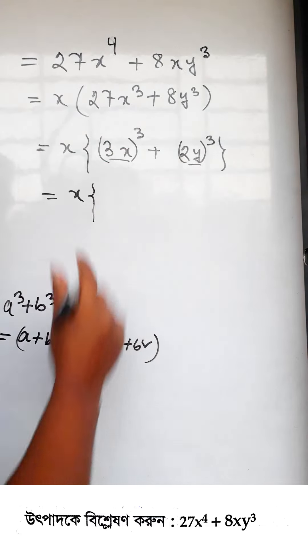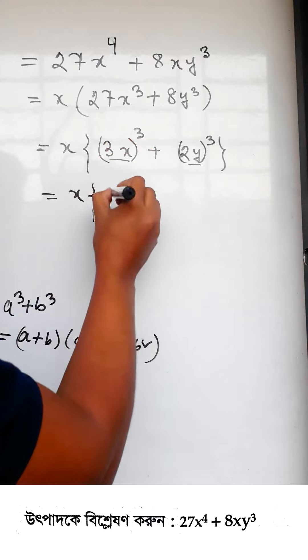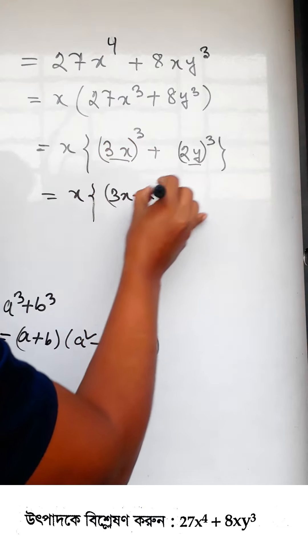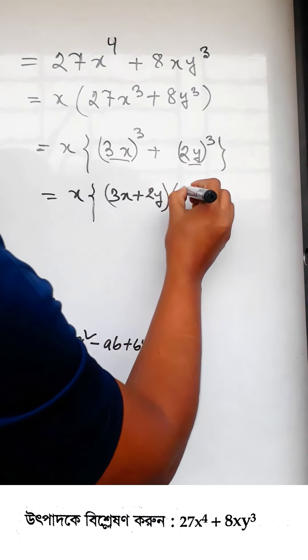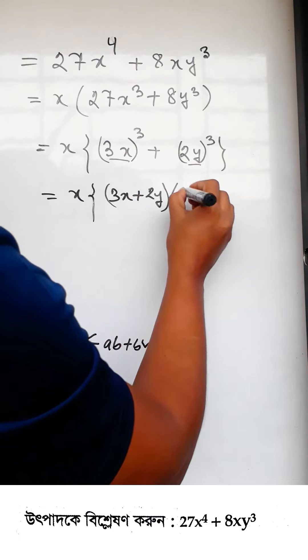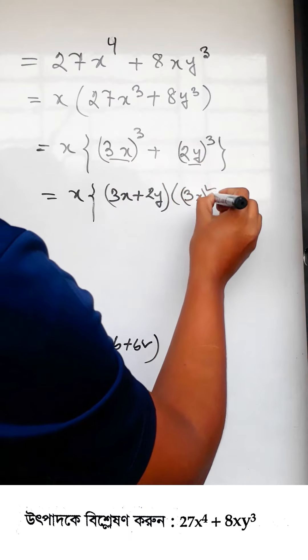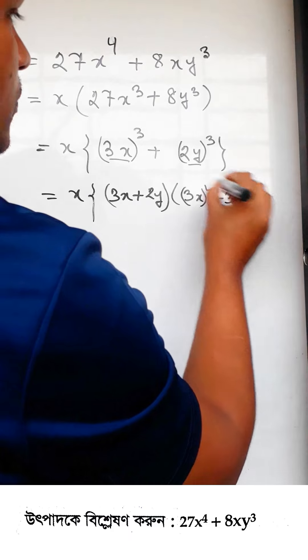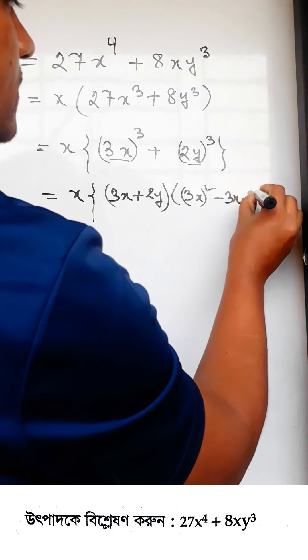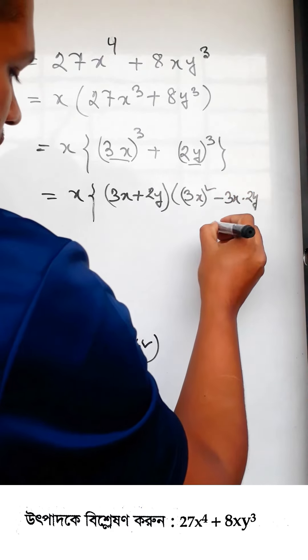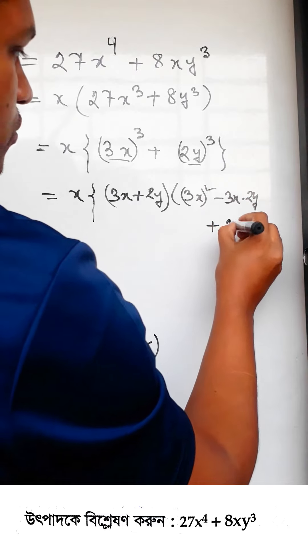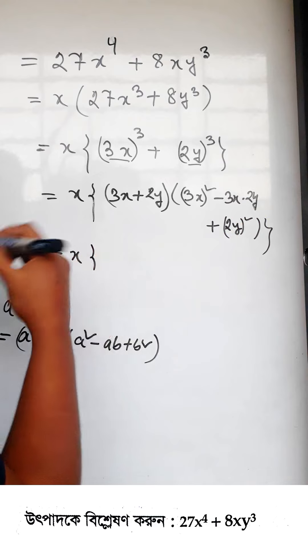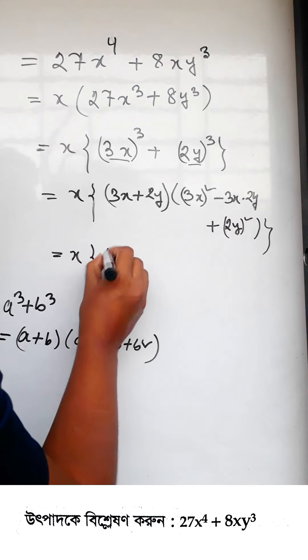So applying this formula where a = 3x and b = 2y, we get: x times (3x + 2y) times ((3x)^2 - (3x)(2y) + (2y)^2).